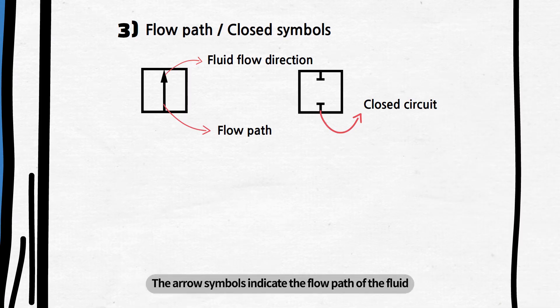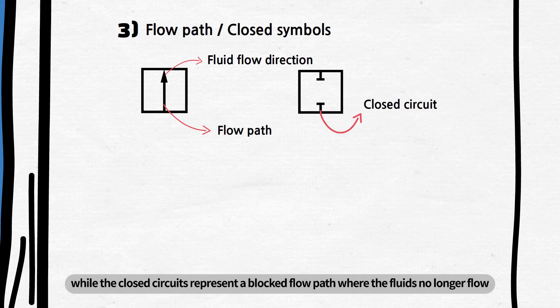The arrow symbols indicate the flow path of the fluid from which port to which it travels, while the closed circuits represent a blocked flow path where the fluids no longer flow.